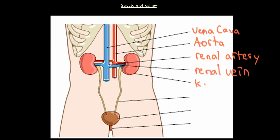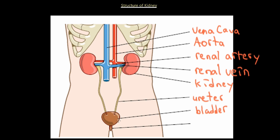This is our kidney. The fluids from the kidney are going to drain into the ureter, which is the tube that connects the kidney to the bladder. The bladder is where we store our urine until it gets full or almost full. Then the fluids are going to be emptied or excreted out through the urethra.